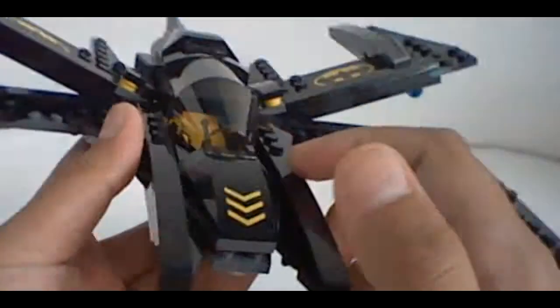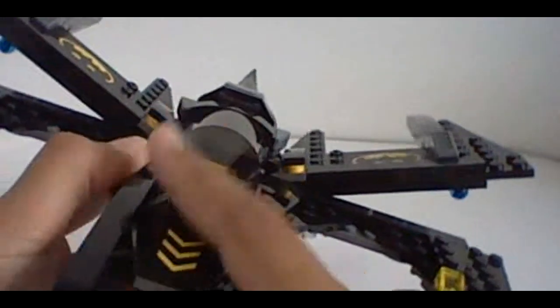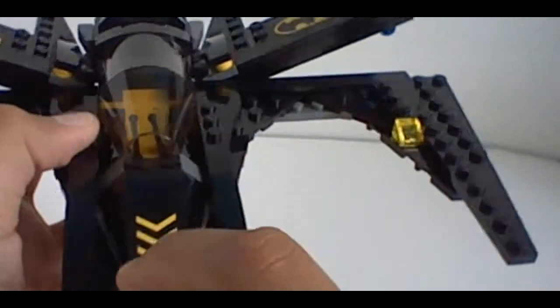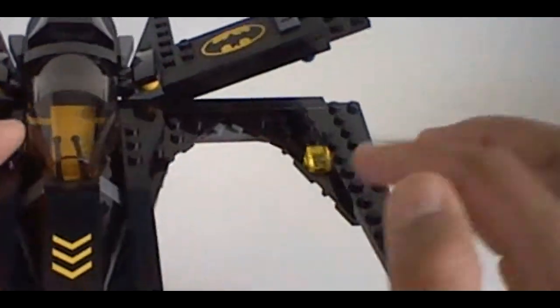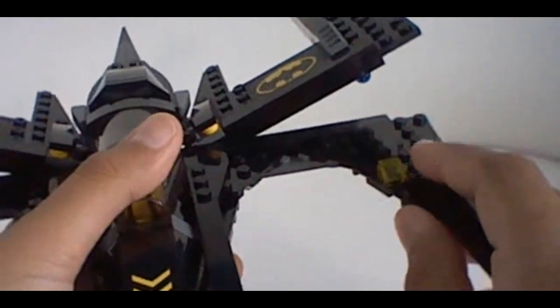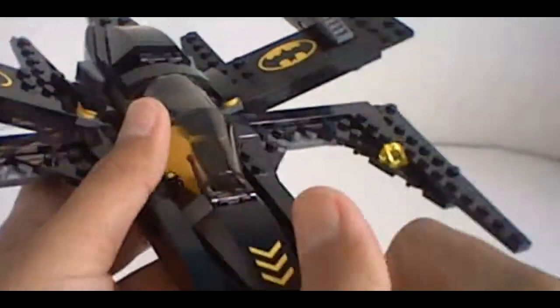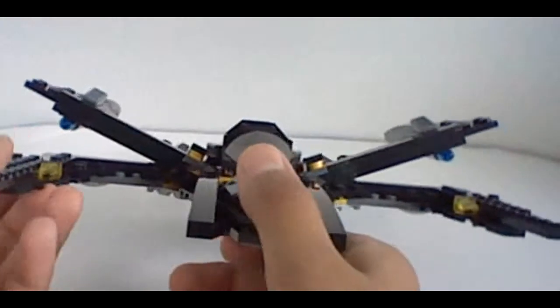First thing we get the build is a Batwing. I really do like the design, like the smoothness of this build. Nice detail there, nice wings. Don't move the other ones do, at the back. Show you that later. Nice lights on either side. He looks really cool from the front.